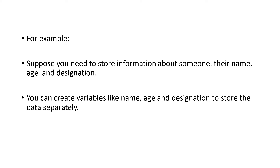Consider a person. A person's details include his name, his age, his designation, and so on. All the details and parameters are not the same data type. Name is a string, age is an integer, designation is again a string, date of birth and salary are integers, and address keeps changing.